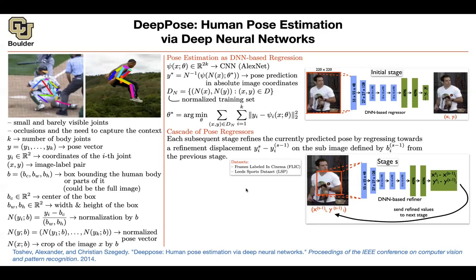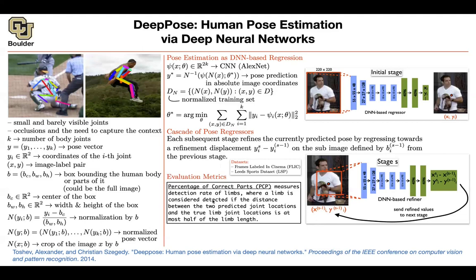The datasets used are labeled frames from CinemaFlick and the Leeds Sports Dataset. A huge component of any ML framework is the evaluation metric. One metric is the Percentage of Correct Parts (PCP), which measures the detection rate of limbs — connections between joints like the knee and ankle. A limb is considered detected if the distance between the prediction and the true limb is at most half the limb length.